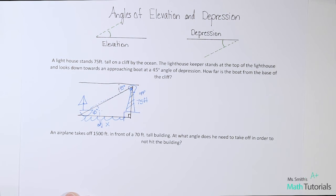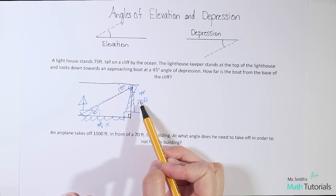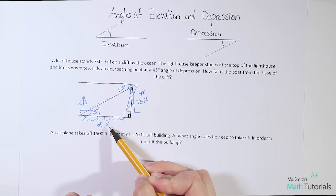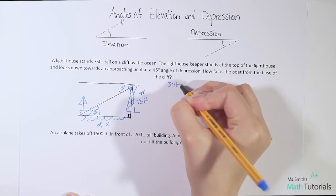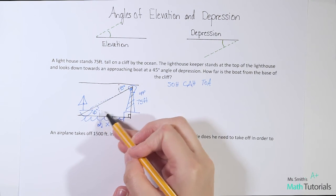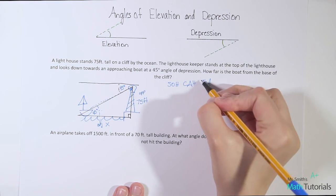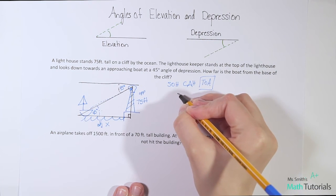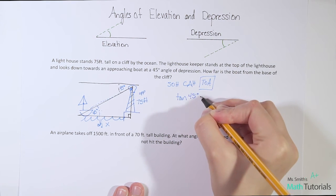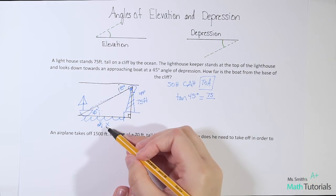Then in that case, this is a perfect situation to use SOHCAHTOA. They've given me one angle, they've given me one side, they've told me it's a right triangle. We need to know a missing side—perfect case for SOHCAHTOA. Which one am I going to use? I've been given the opposite and I need to know the adjacent, so which one uses opposite and adjacent? TOA. Tan of the angle we've been given, 45 degrees, not the 90 degrees, equals opposite 75 divided by the adjacent, x.